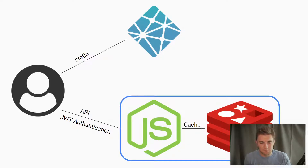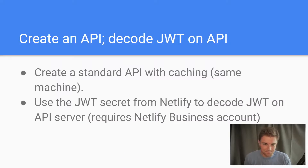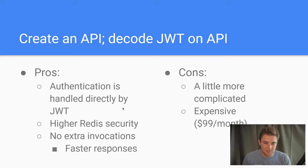The fourth solution: the user requests static content from Netlify, then makes requests to an API with JWT authentication. This requires a business plan to access your JWT with Netlify Identity, but then you don't have to make a request to Netlify to authenticate a user — you can just find the roles by decoding the JWT, and handle caching on the same server so you don't need Redis open to the public. Technically this is probably the best solution. You create a standard API with caching and use the JWT secret from Netlify to decode JWT requests. Pros: authentication handled directly by the JWT, higher Redis security, and no extra Netlify function invocations, meaning faster responses. Cons: more complicated and expensive — the business plan is $99 a month.